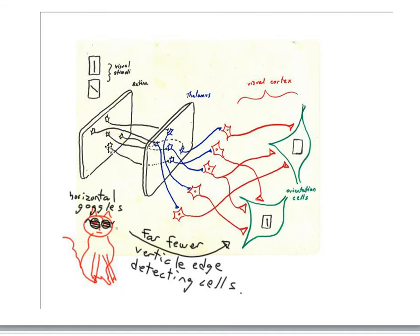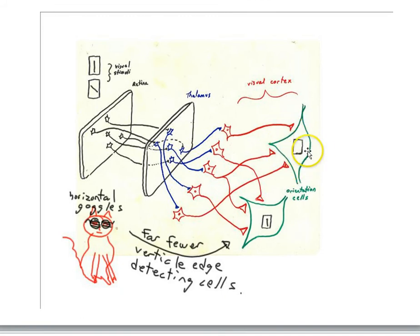An edge of light or darkness can activate these cells and you'll get activity in this cell but not that cell. If you follow the wiring for the diagonal cell — again, under the condition that all three of its inputs have to be active simultaneously — then you'll find that occurs when there's a diagonal band of light hitting the retina. So we would call these edge detectors, and they become edge detectors because of the wiring between the retina, thalamus, and the cortex.